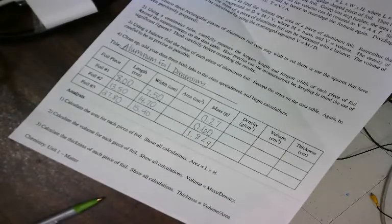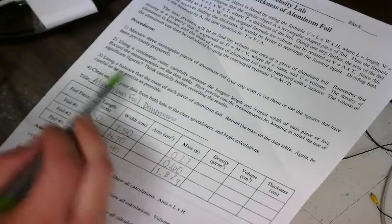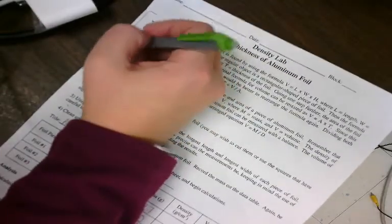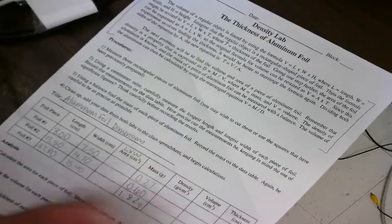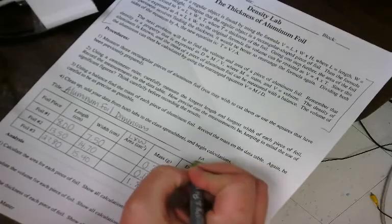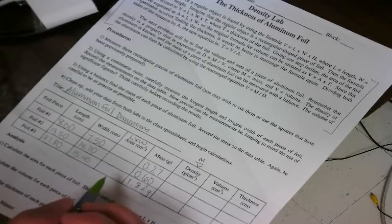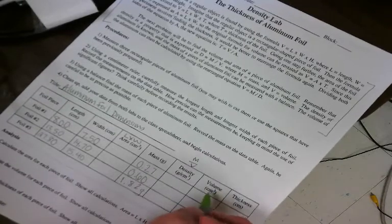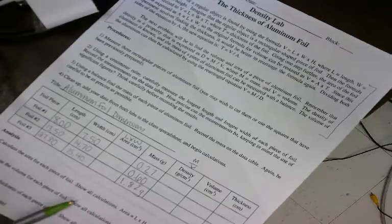Now we need to calculate some things — it's always good to go back and read the directions. Area is length times width, which should be easy to calculate. Density is mass divided by volume. So I'm going to need to find my volume. I forgot — we're going to need to look up the density of aluminum foil.